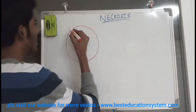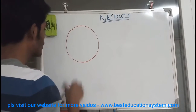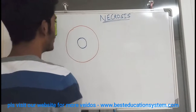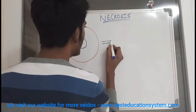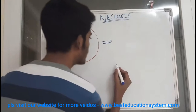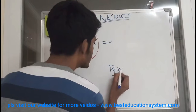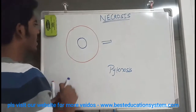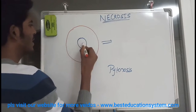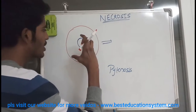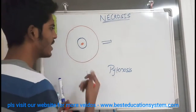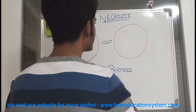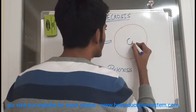Let's take this as a normal cell with a normal cell nucleus. The first process is called pyknosis. In pyknosis, the nucleus present in the normal cell undergoes shrinkage — meaning a decrease in size. So the cell looks like it has a shrunken nucleus.